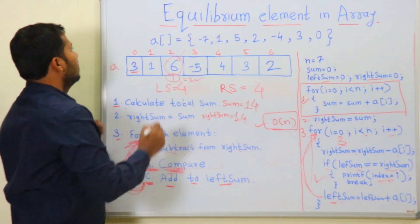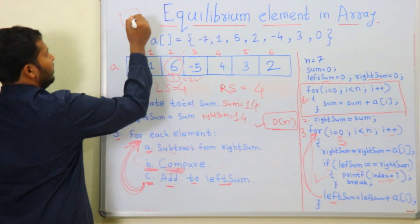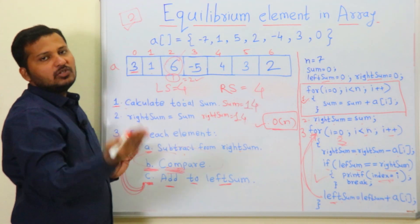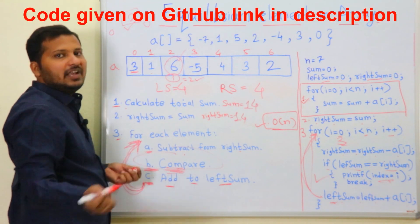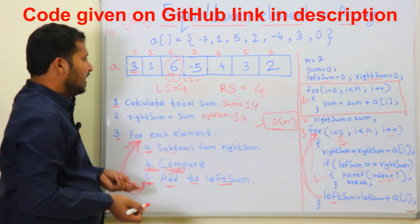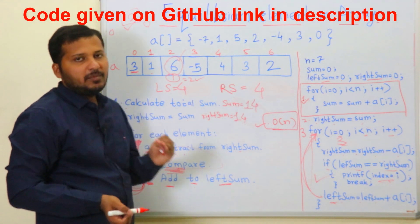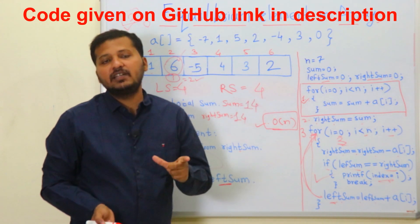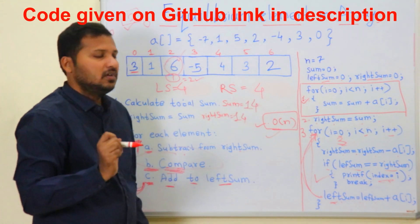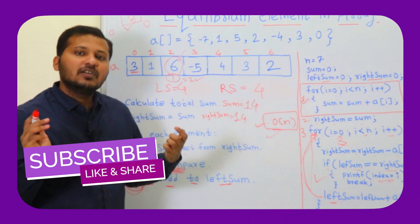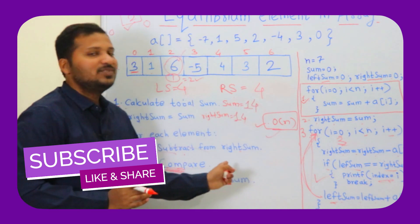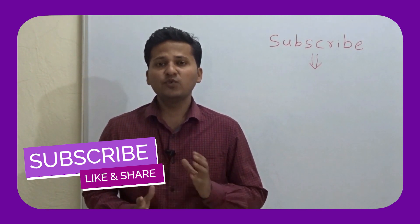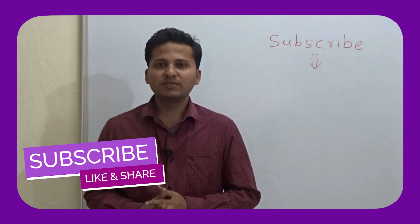For an array with a single element, that element itself is the equilibrium element, because both left and right sums are 0. The full code is on GitHub — the link is in the description. This algorithm is very important for interviews because its time complexity is O(n). Subscribe to the channel for more algorithm videos, and mention any topic you'd like covered in the comments.